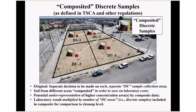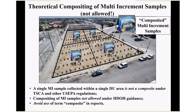In some reports, composite samples are described just like a multi-increment sample, but used differently. You could theoretically composite multi-increment samples, but in reality you would never do this. A key point: a multi-increment sample is not a composite sample under TSCA and other EPA regulations. Compositing of multi-increment samples is not allowed under our guidance. We really recommend you avoid the use of the term 'composite' in any reports unless you happen to be dealing with a regulator who understands the distinction.